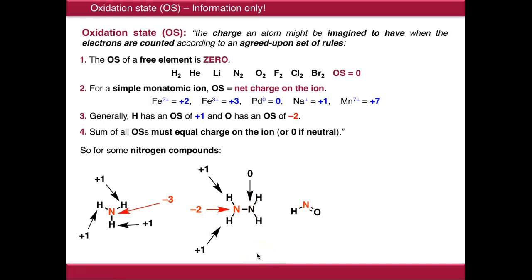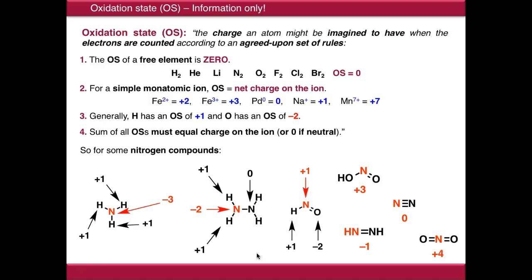Moving to the next compound, we have plus one and minus two, so the oxidation state of nitrogen must be plus one. In another case it's plus three. Dinitrogen is zero, as it's a free element. In further molecules the oxidation state of nitrogen is minus one, then plus four, and then plus five. Already we can see that, just using nitrogen compounds, there are a range of different oxidation states.